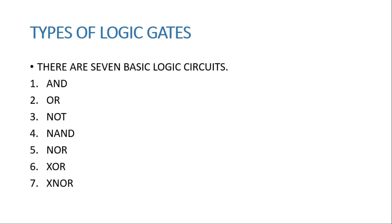Types of logic gates: there are seven basic logic gate circuits — AND, OR, NOT, NAND, NOR, XOR, and XNOR. In this particular topic I am going to explain only AND, OR, and NOT. The remaining ones will be explained in the next chapter.